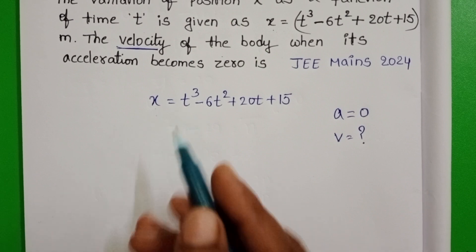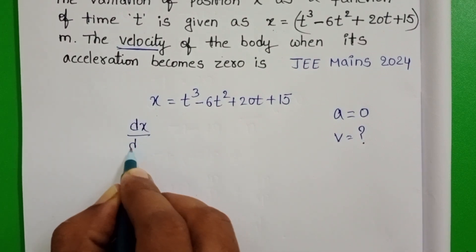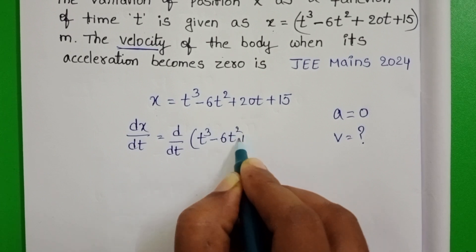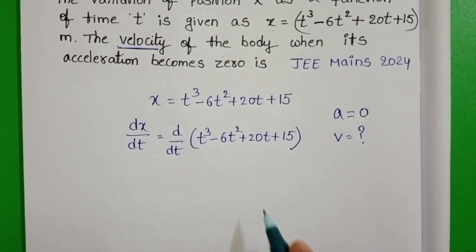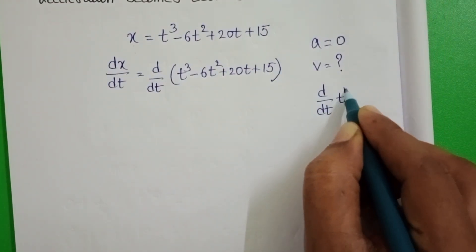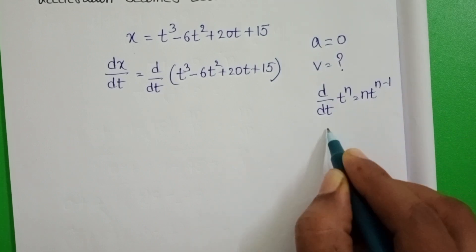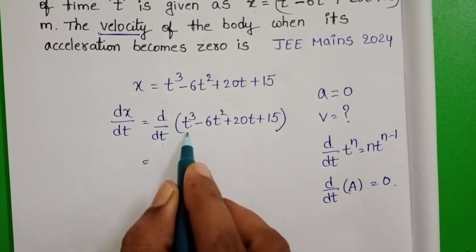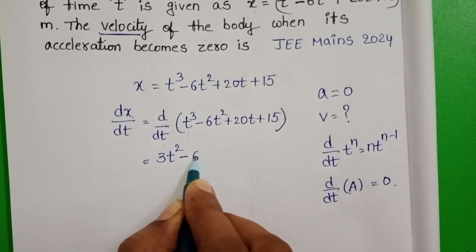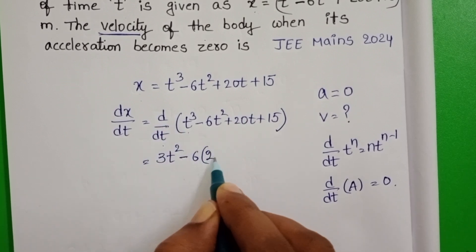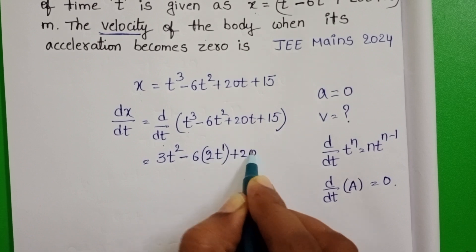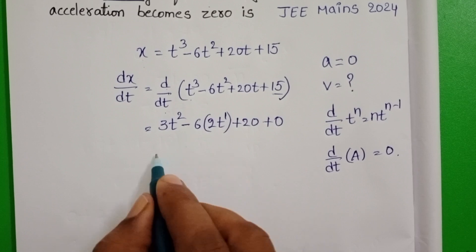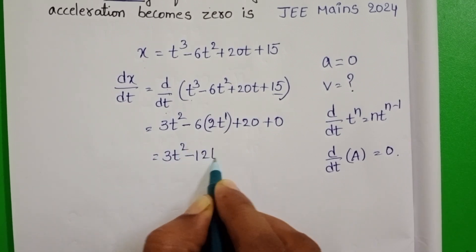Differentiating the given displacement with respect to time gives velocity. dx/dt equals d/dt of the given equation. Using the formula d/dt of t to the power n equals n into t to the power n minus 1, and differentiation of any constant equals zero: d/dt of t cubed becomes 3t squared, minus 6 times 2t, plus 20. So velocity v equals 3t squared minus 12t plus 20.